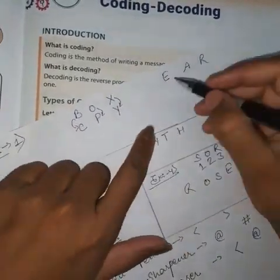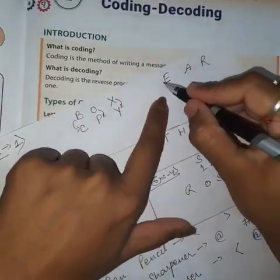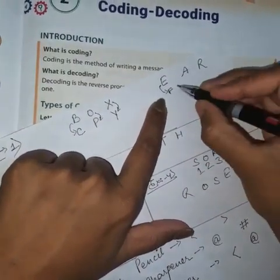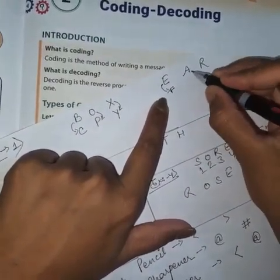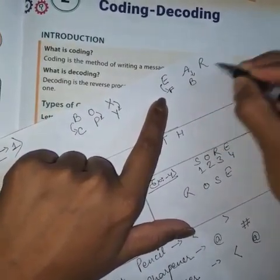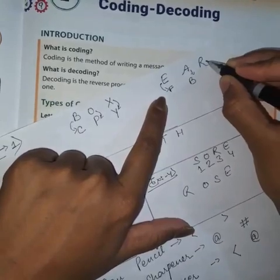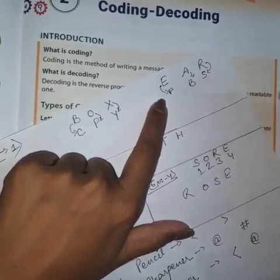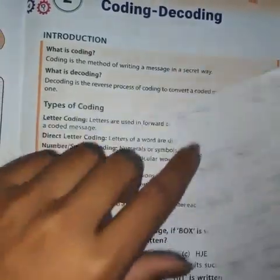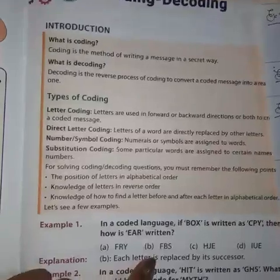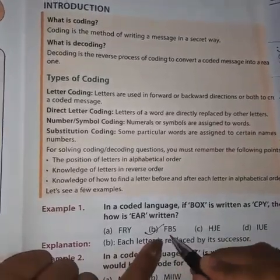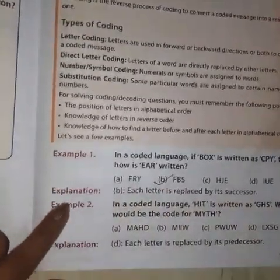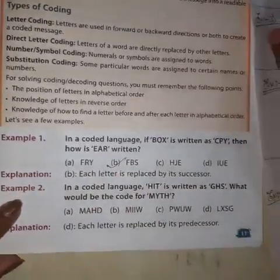Applying the same logic: what comes after E is F, what comes after A is B, and what comes after R is S. So the right option is B — FBS.